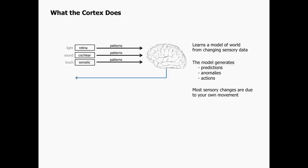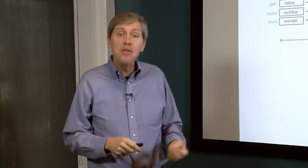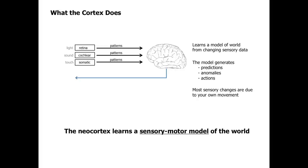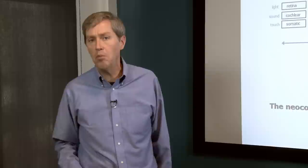Because the neocortex generates behavior, when you act in the world you move your sensors — your eyes, head, body — changing the inputs coming in. Most of the changes occurring on your sensory organs come from the fact that you're moving. So the neocortex learns a sensory-motor model of the world: how the sensory data changes when you act upon the world. From that we can produce goal-oriented behavior and all the things humans do.